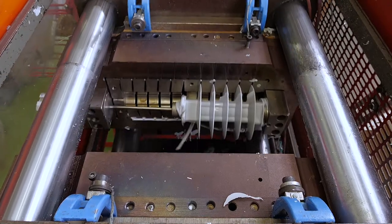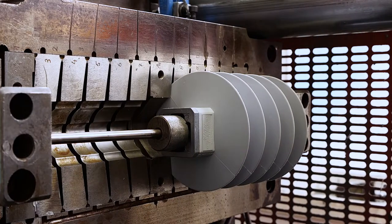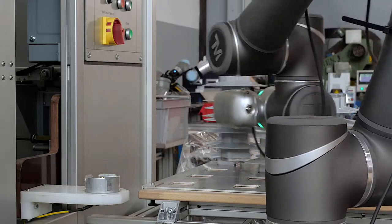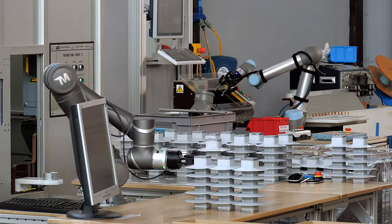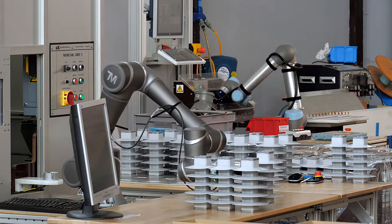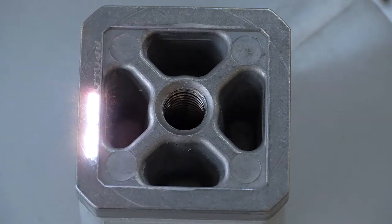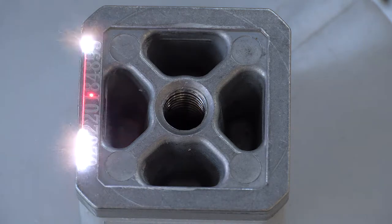After siliconizing, all surge arrestors are 100% tested on calibrated devices where partial discharges, reference, and residual voltage values are measured using routine tests. The reference number of the conducted tests is then engraved onto each surge arrestor.